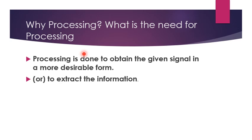What is the need for processing? Processing is done to obtain a signal in a more desirable form — for example, noise filtering, or improving the quality of a picture in terms of brightness or contrast. Another example: when multiple signals are transmitted over the same channel, we perform multiplexing, and at the receiver end, demultiplexing separates them. This is called processing.